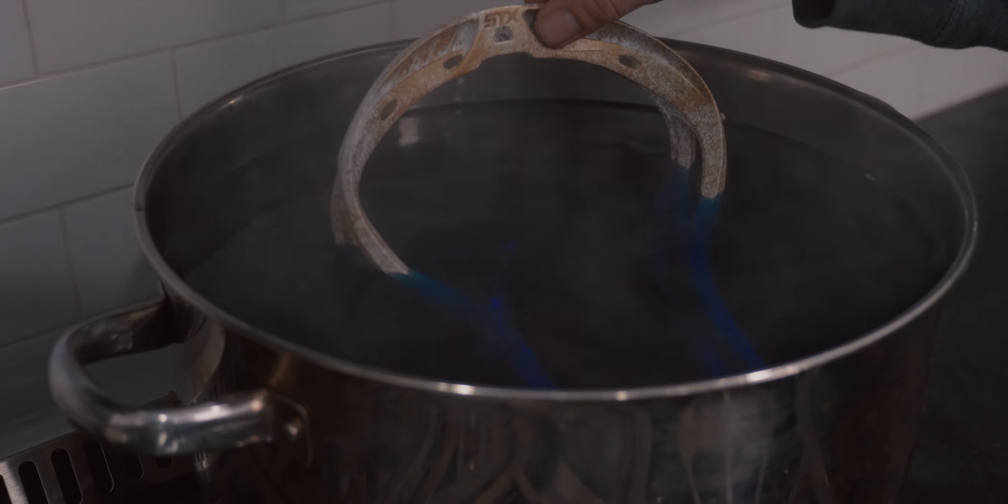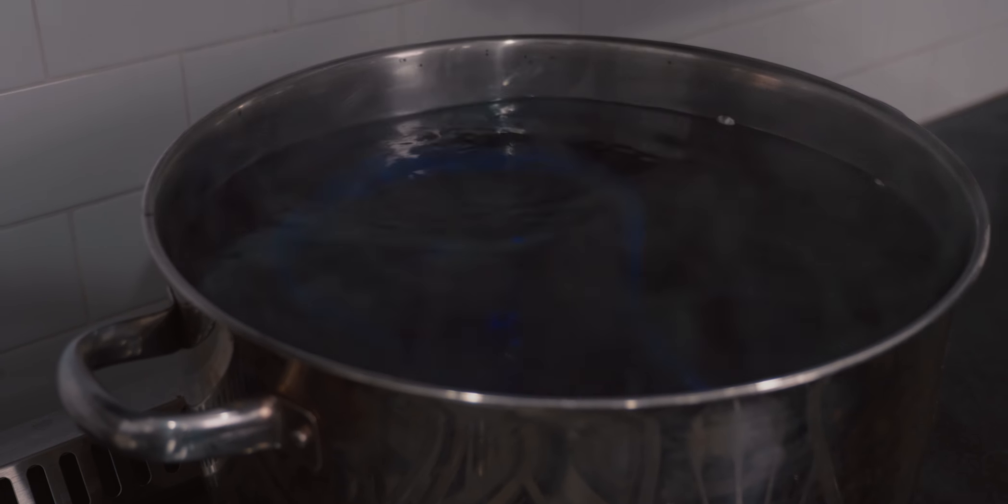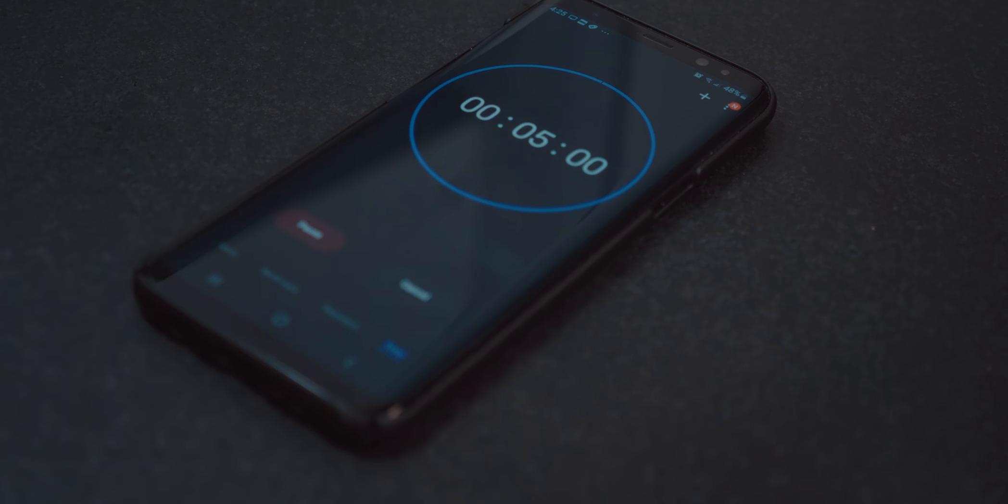It should be at a nice simmer. With our dye bath all ready to go, we're going to chuck the head in for five minutes and set a timer and pull it out after that five minutes. If we're happy with the color, we're good to go. If not, we're going to keep putting it in for three minutes at a time until we are happy.